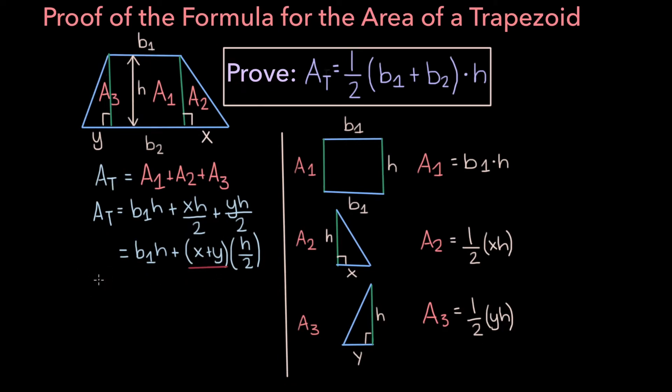And the formula we need here is b1 plus x plus y equals b2. And this is true because b1 is our top base, and if you attach these add-ons x and y to b1, you'll get the bottom base, which is b2. Now if we subtract b1 from both sides, we get an equation for x plus y, which is x plus y equals b2 minus b1.